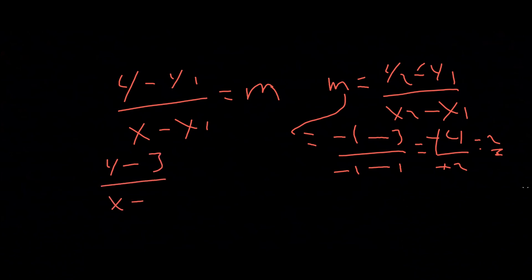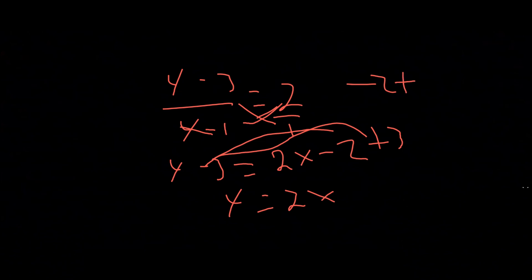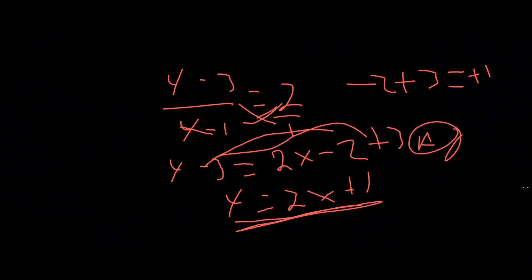Now using the point-slope form with point (1,3) and slope 2: y minus 3 over x minus 1 equals 2. Cross-multiplying: y minus 3 equals 2 times (x minus 1), so y minus 3 equals 2x minus 2. Adding 3 to both sides: y equals 2x minus 2 plus 3, so y equals 2x plus 1. The answer is a) y equals 2x plus 1.